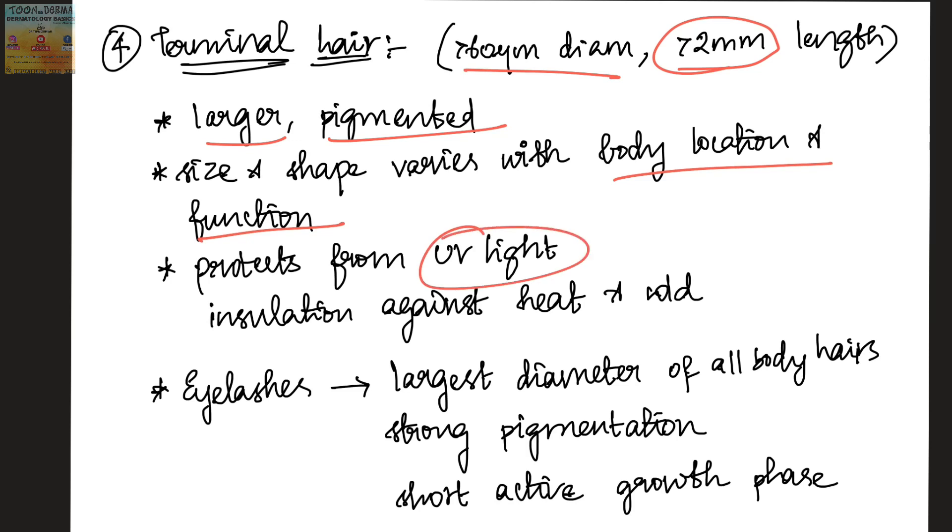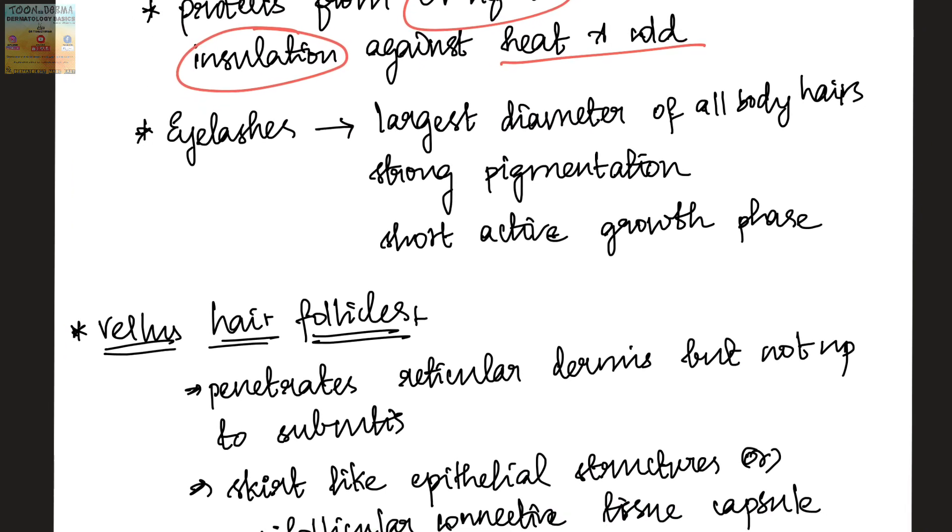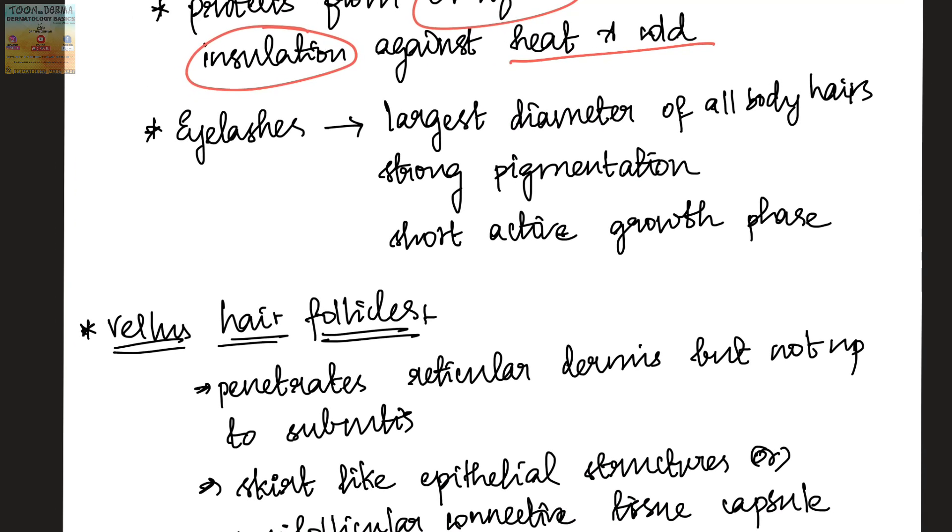What are its functions? It protects from UV light and acts as an insulation against heat and cold. The eyelashes have the largest diameter of all the body hairs, and they have strong pigmentation and short active growth phase.